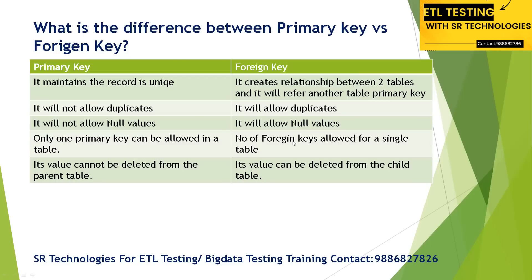What is the difference between primary key versus foreign key? A primary key is a combination of unique key as well as NOT NULL. A primary key always maintains the data as unique — it does not allow any null values, it does not allow any duplicate values, and at the table level it allows only one primary key.